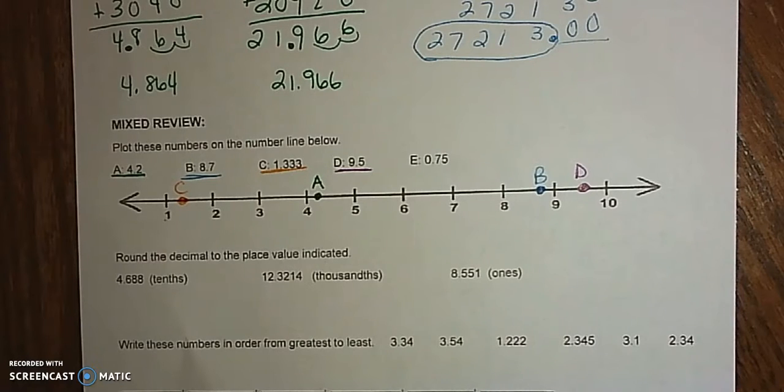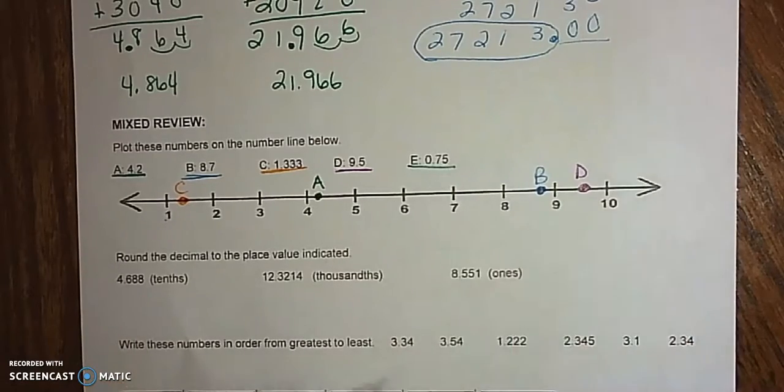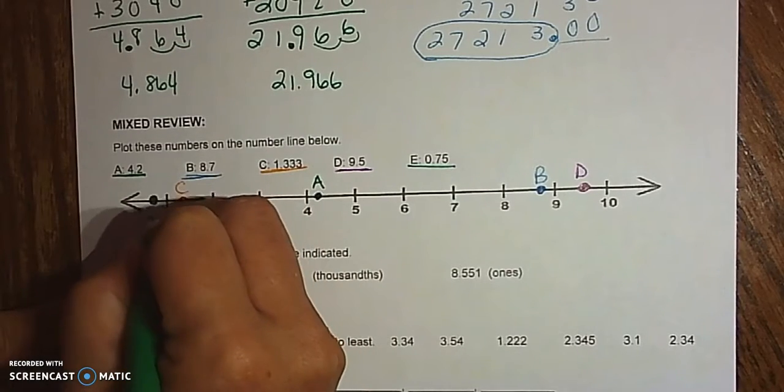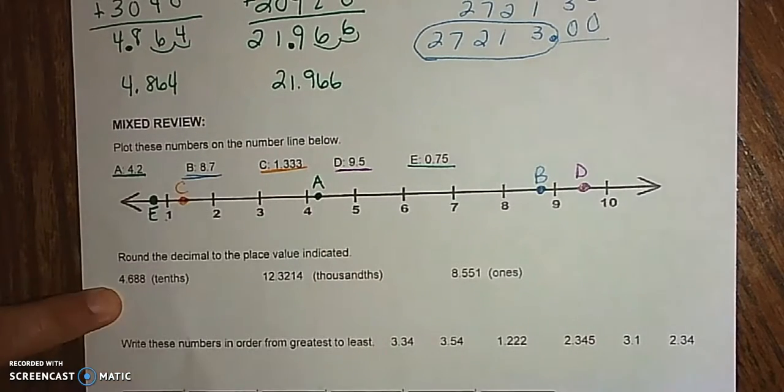And for the last one, I'm going to go back to green. It says E is 0.75, which is like 75 cents, less than a dollar, so it's going to go right here. There is E.